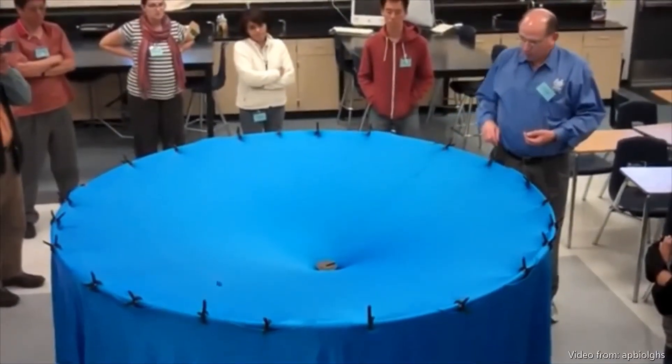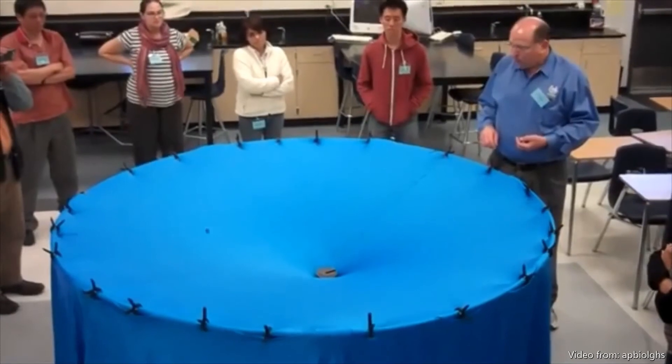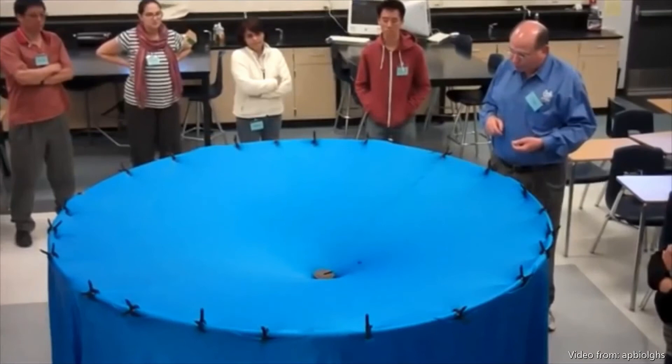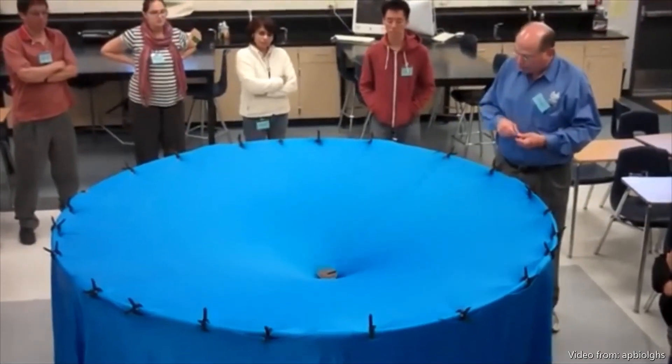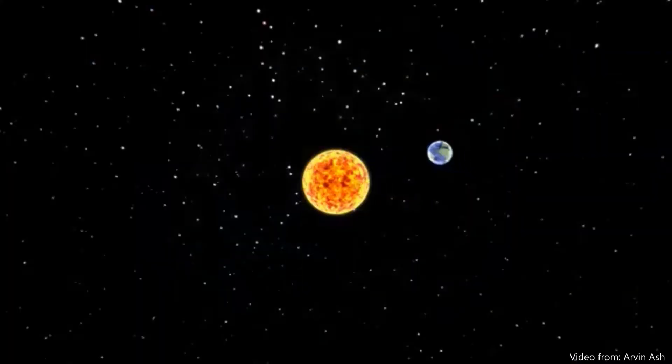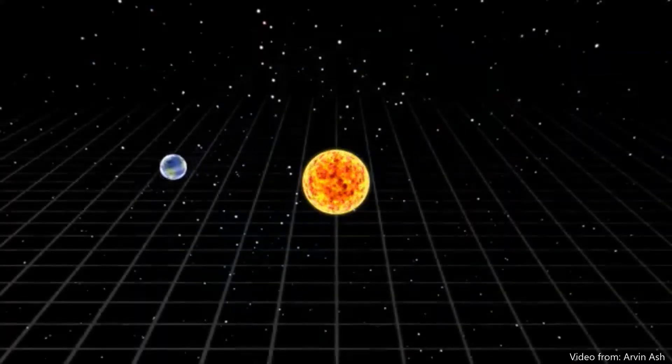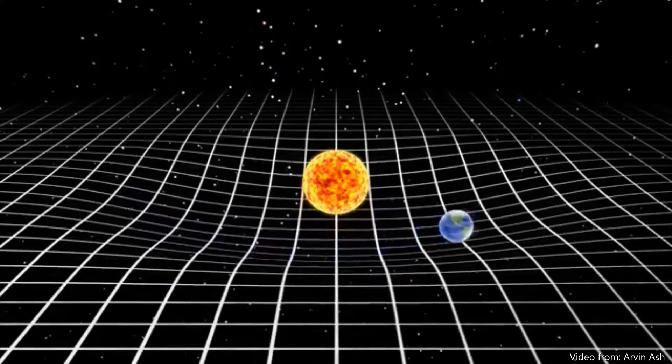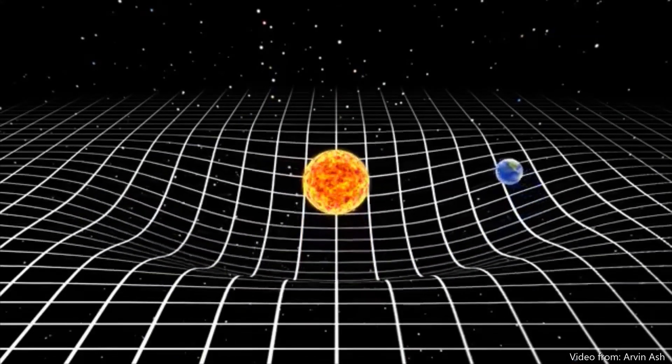Then, a marble was placed at the edge of the trampoline. It would then spiral inwards and towards the ball. Now, try to imagine that the ball is the Sun and the marble is the Earth. Since the Sun is the most massive object in the solar system, it warps the spacetime around it, making a curve. That is why the solar system is held together.